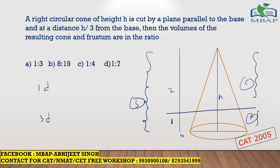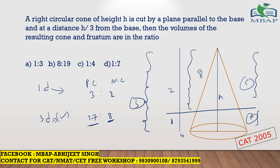For the original full cone the height was 3; for the resulting smaller cone on top the height is 2. The ratio of heights is 3 to 2. Since height is a one-dimensional figure, the ratio of volumes is the cube of the height ratio. So volume ratio of original cone to new smaller cone is 3³ to 2³, which is 27 to 8. The smaller cone at the top has volume 8 out of 27.